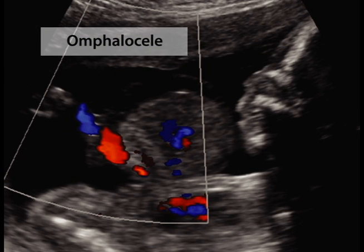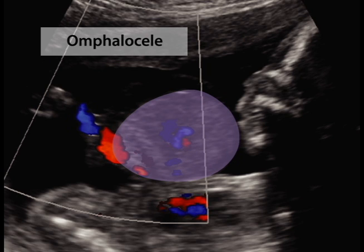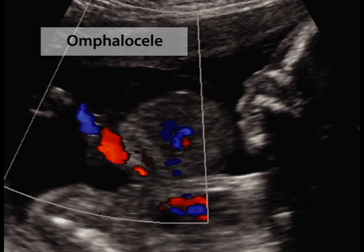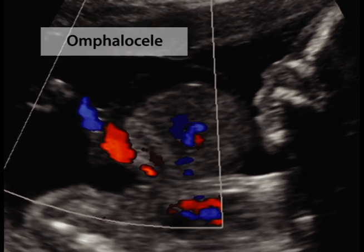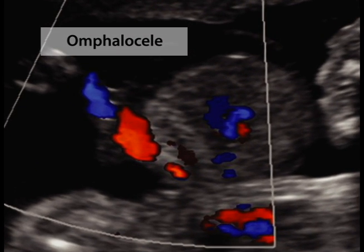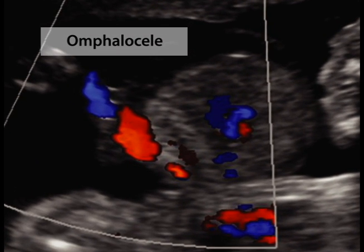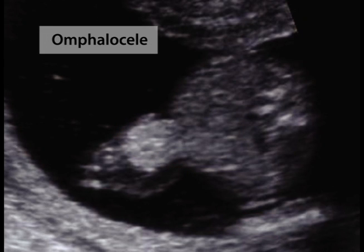Because abdominal organs herniate into the umbilical cord, they are covered by amnion and peritoneum, which gives the fetal omphalocele a round, sac-like appearance. The cord, highlighted here with color Doppler, inserts directly into the omphalocele sac. This fetus has a small omphalocele highlighted here.